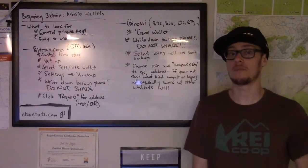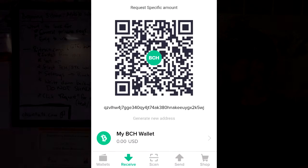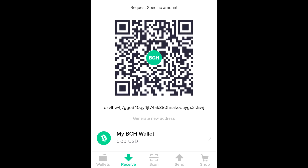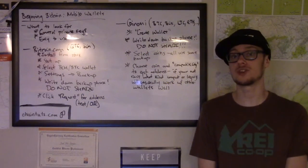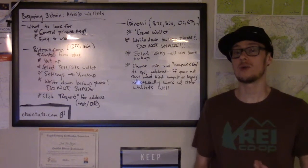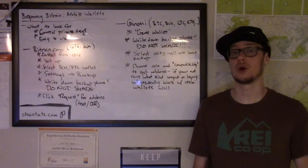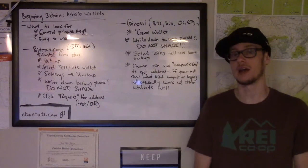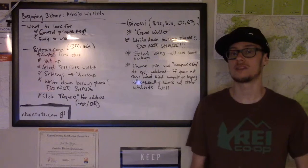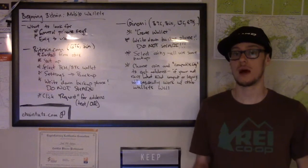Now your wallet is already backed up, which is the most important thing, and all you need to do is click request or receive to get an address you can use to send money to. In Bitcoin and cryptocurrencies, unlike a credit card number which a merchant pulls funds from, an address is something that you send money to. You can give this address to a friend who wants to send you some Bitcoin, or if you're using an exchange you can send money from the exchange wallet to your wallet so that you actually control your own money. I like to buy cryptocurrencies on Coinbase because it's easy for purchasing, but I always send anything I bought to my mobile wallet that I control.